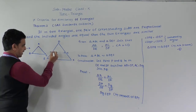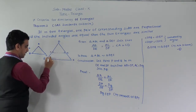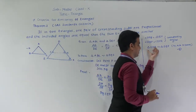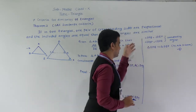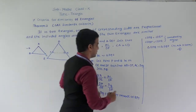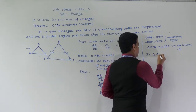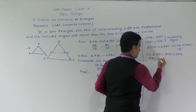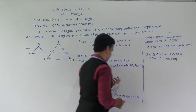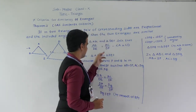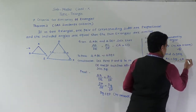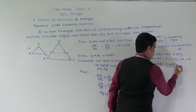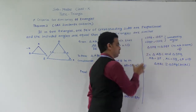Since PQ is parallel to EF, corresponding angles are equal: angle DPQ equals angle DEF and angle DQP equals angle DFE. So these two triangles are similar by AA criteria. Up to this point, the proof is the same. After that, in triangle ABC and triangle DPQ: AB equals DP, angle A equals angle D (given), so triangle ABC is congruent to triangle DPQ by SAS criteria.